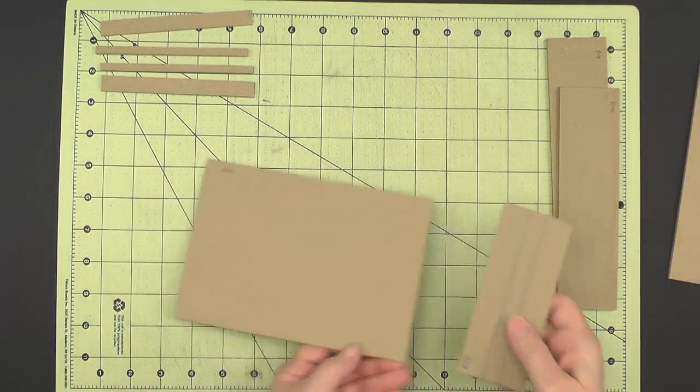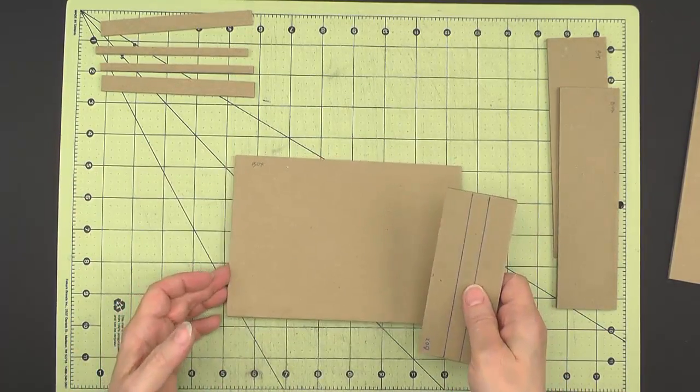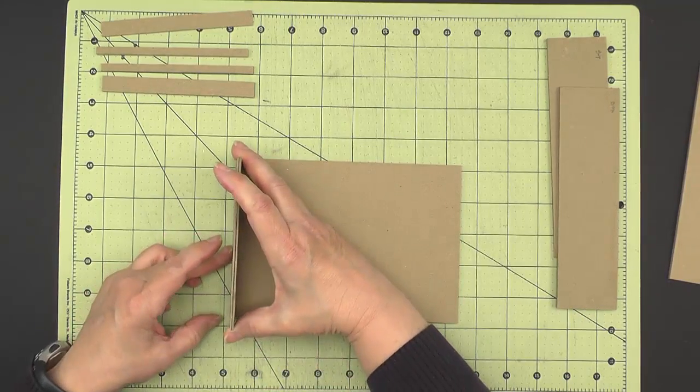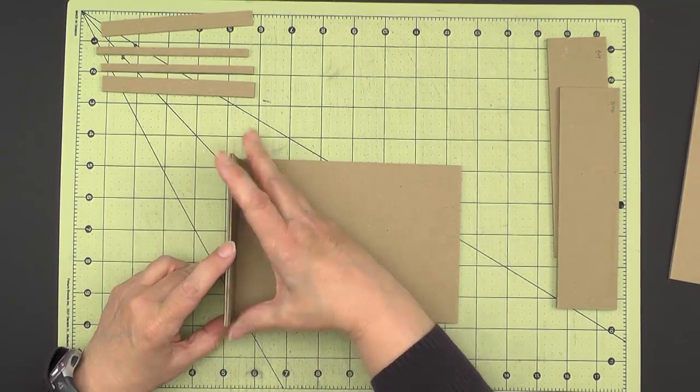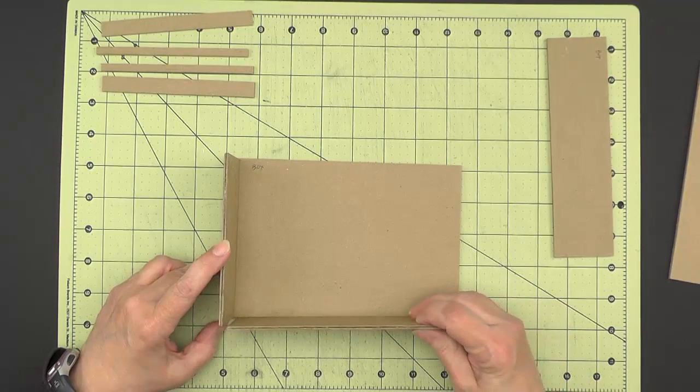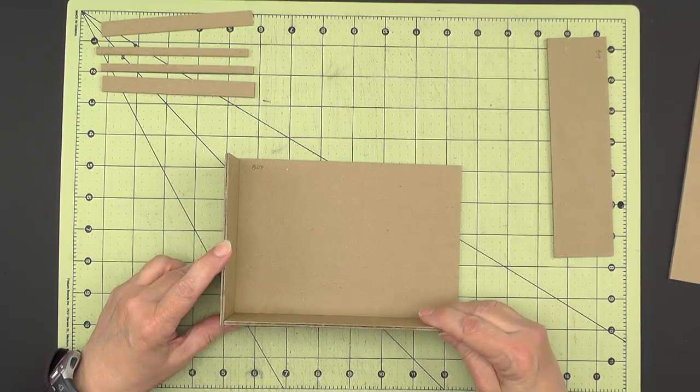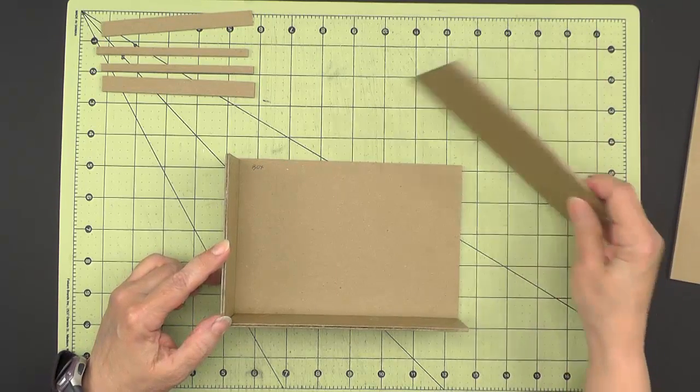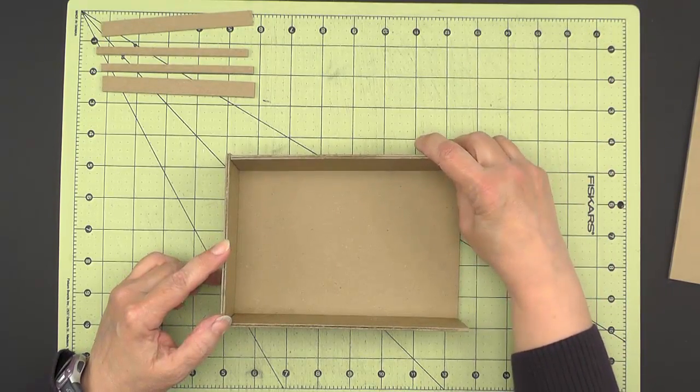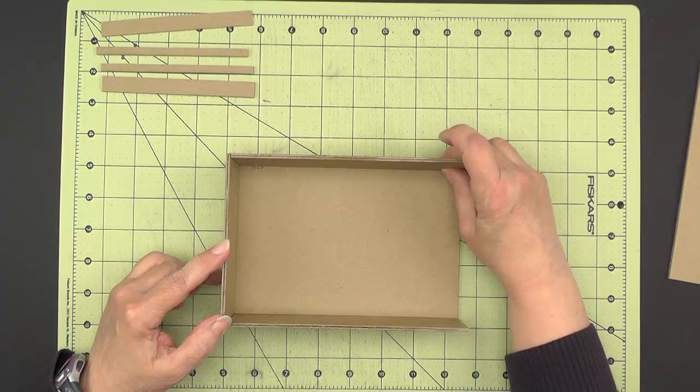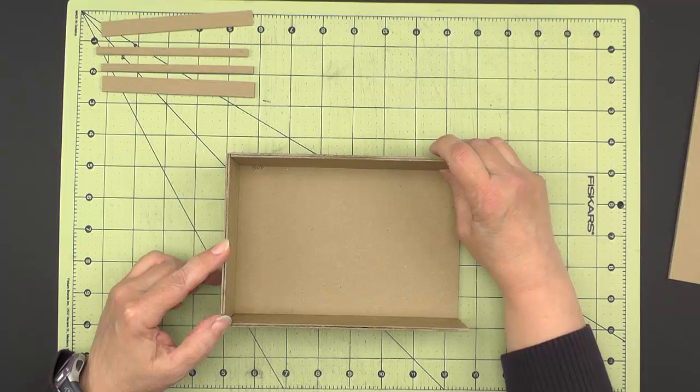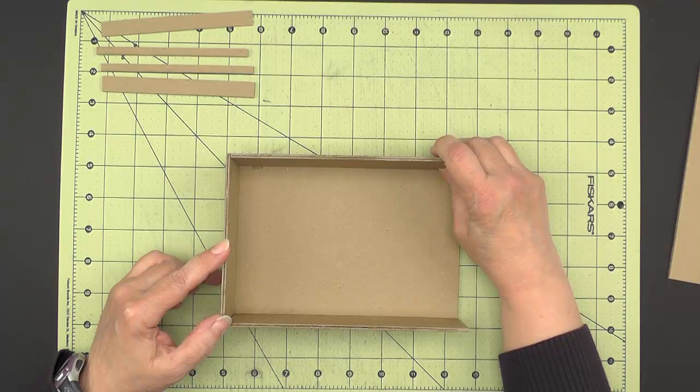Now to do this construction, we'll start with one of our bigger pieces on the bottom and then we'll glue on the end piece, and then butt up these two sides. They're sized so they fit right butted up against that end piece like this. And once those are set up I'll add my second large piece on the top and then I'll let that thoroughly dry.